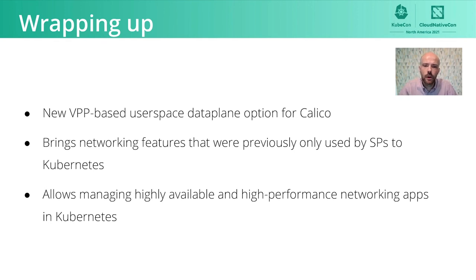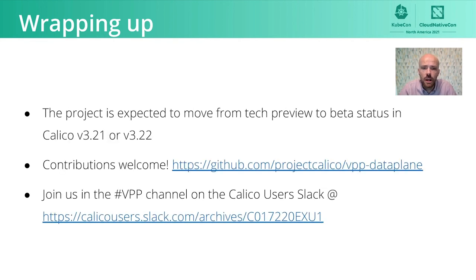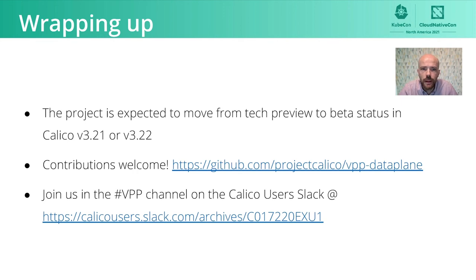Thanks, Alois — it's fantastic tech. In summary, this is a new VPP-based user-space data plane for Calico. It brings networking features that were previously only used by service providers to Kubernetes, and allows managing high-availability and high-performance networking apps in Kubernetes. We have exciting features on the horizon, including Maglev load balancing, packet-oriented interfaces, and hopefully soon general availability in Calico. The project is expected to move from tech preview to beta status in Calico v3.21 or v3.22. To stay up to date, join the VPP channel in the Calico users Slack. Head over to the Calico documentation for setup instructions for VPP and all the other data planes, and feel free to ping us on Slack with any questions. Thanks very much for listening.